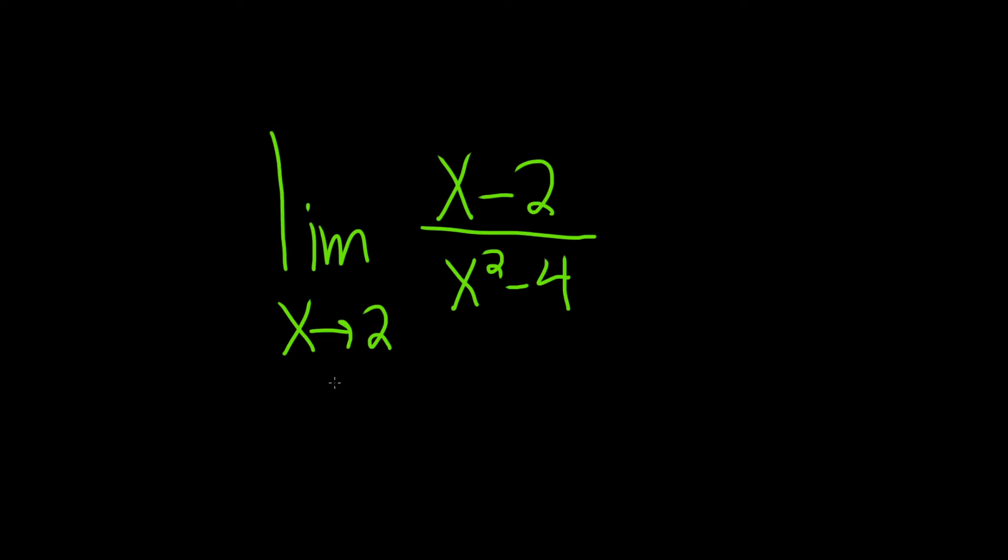In this problem, we're going to find the limit as x approaches 2 of x minus 2 over x squared minus 4.